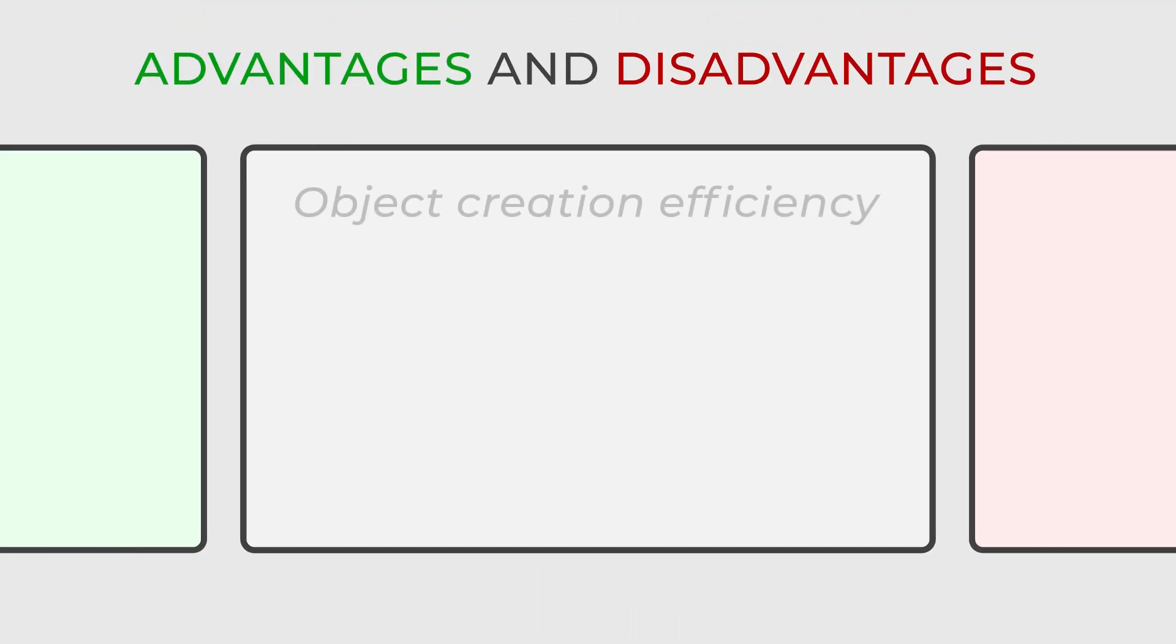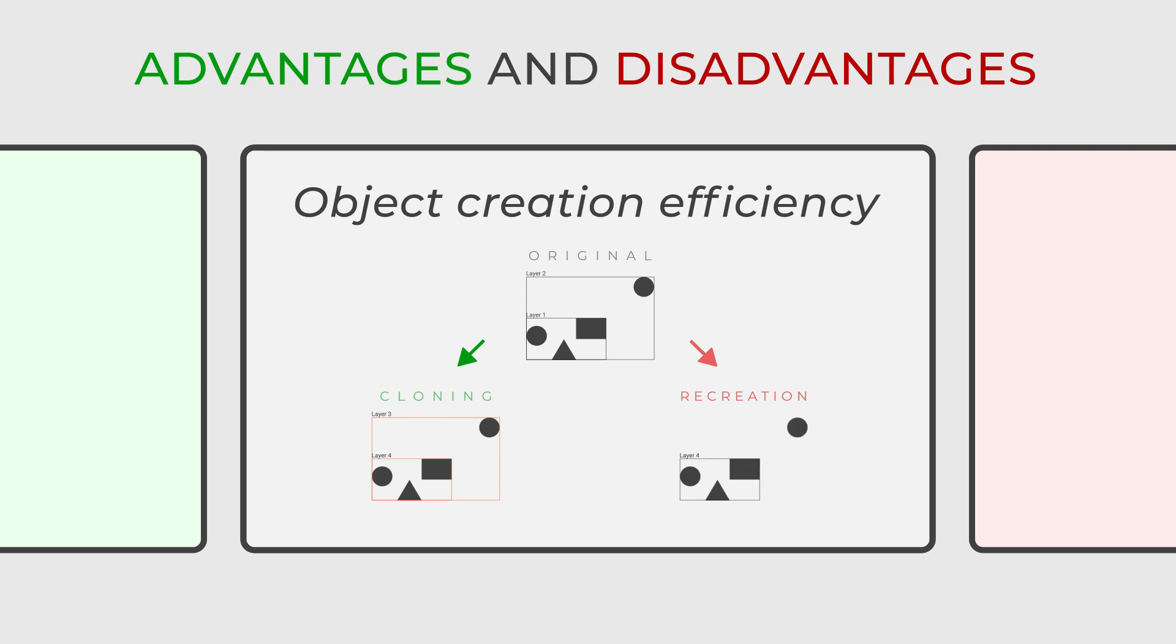The prototype design pattern provides a range of advantages and disadvantages for object creation and management. Enabling the cloning of objects reduces the overhead associated with recreating and initializing objects from scratch significantly. This results in a more efficient and streamlined process, especially when object initialization is resource intensive.